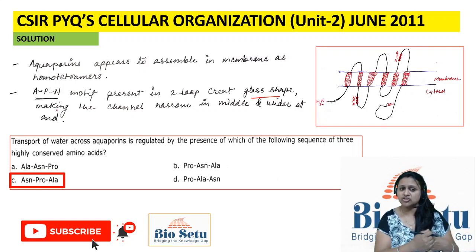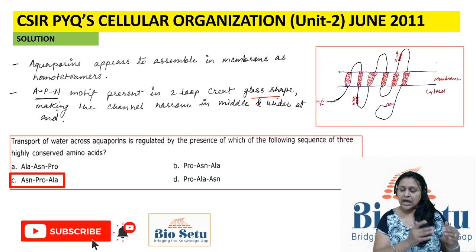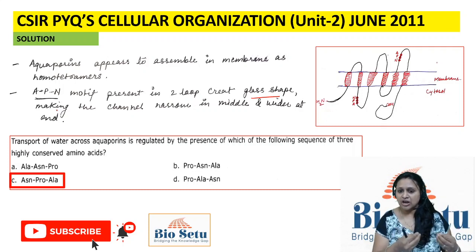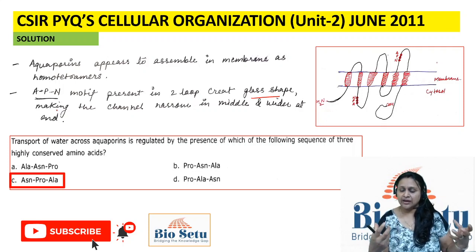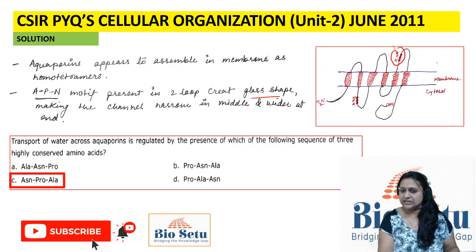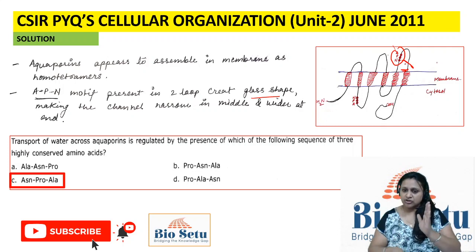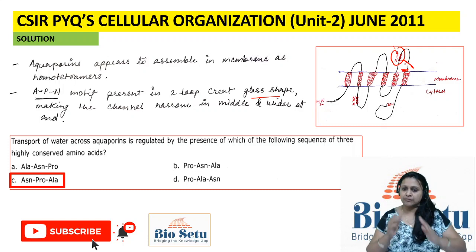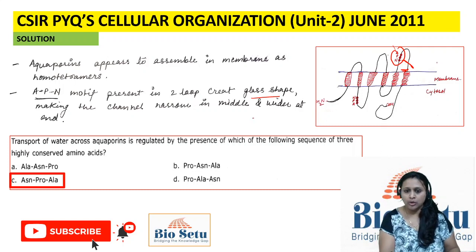The glass-shaped structure is because these are positively charged amino acids. In the phospholipid bilayer, due to the phosphate group, there is a negative charge. Because of positive-negative attraction, they get attracted and form a funnel-shaped structure on the outside and inside of the membrane.